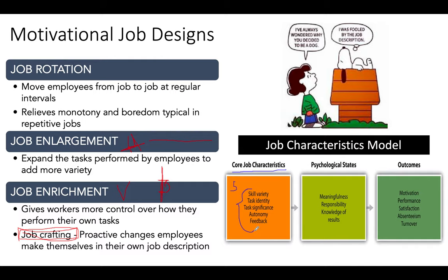The more you have of these five characteristics, the more you experience certain psychological states — more meaningfulness, more responsibility, knowledge of the results of your work, actually seeing what's happening. That is very satisfactory. The outcomes include higher motivation, hopefully higher performance, increased happiness, reduced absenteeism, and lower turnover — we're not going to see employees leave the company as much.